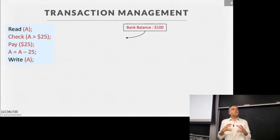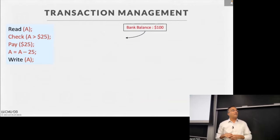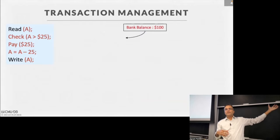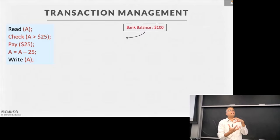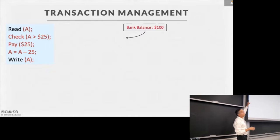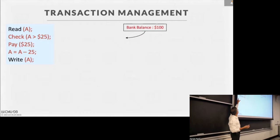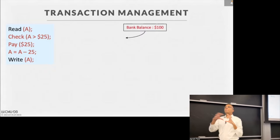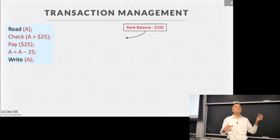Transaction management allows us to do things safely in a database system in situations where multiple things are getting updated all at the same time. Here is a schematic of database operations — these could be fired through a SQL query. From the perspective of the transaction management component, we look at operations at the object level. We read an object, do some checking, perform an action like pay, subtract 25, and eventually write that. We are largely concerned with the read and write operations that happen with each database object.